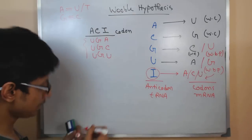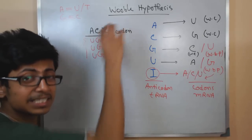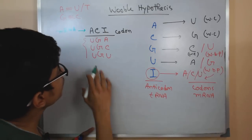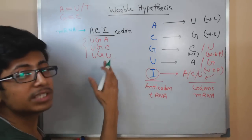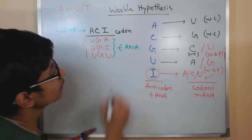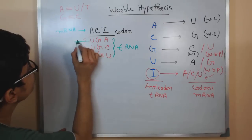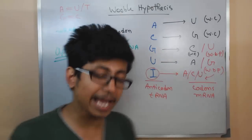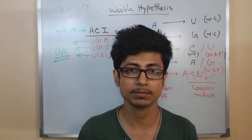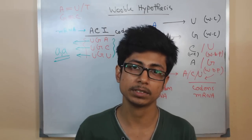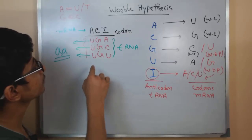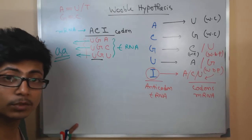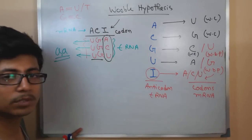So if we have a codon like ACi in mRNA, it can pair with anticodons UGA, UGC, or UGU from tRNA. All these different anticodons can code for different amino acid sequences. So for one codon we can have different amino acid outcomes due to the wobble hypothesis. In this case, the first two positions UG remain constant, and only the last position varies due to the presence of inosine.